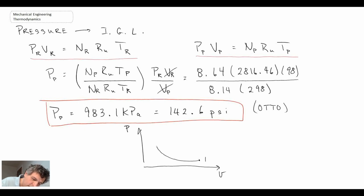If you recall, the auto cycle looks something like this. We started at state 1, we moved up to a state 2, we then went into constant volume combustion, taking us to state 3, and then that brought us down to state 4.